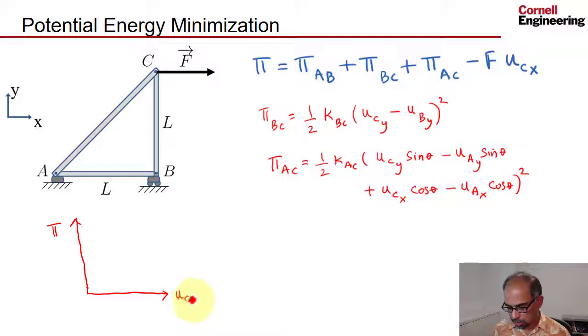If I look at this expression, you see y is squared here and also squared there, and it doesn't appear in this term. If I move C, it affects only the potential energy of this bar and this bar. It also doesn't affect the work done by the force because that's in the horizontal direction. So this will have a parabolic variation, and equilibrium will be when that potential energy is minimum.